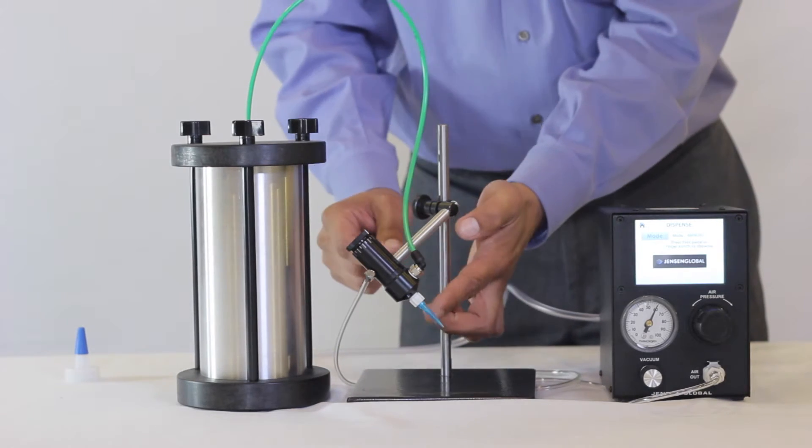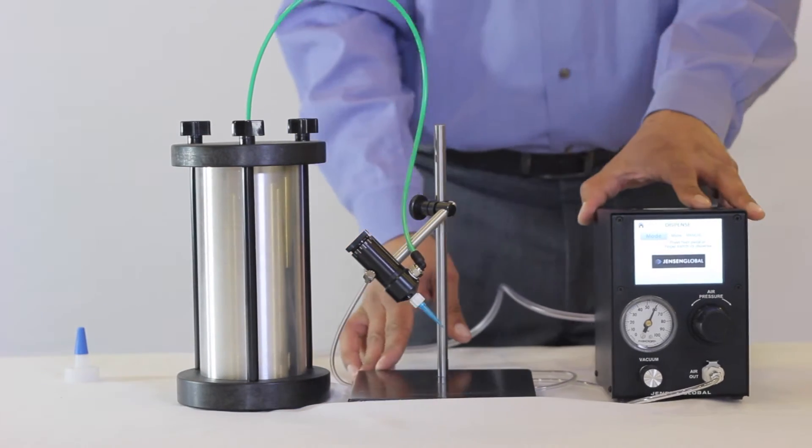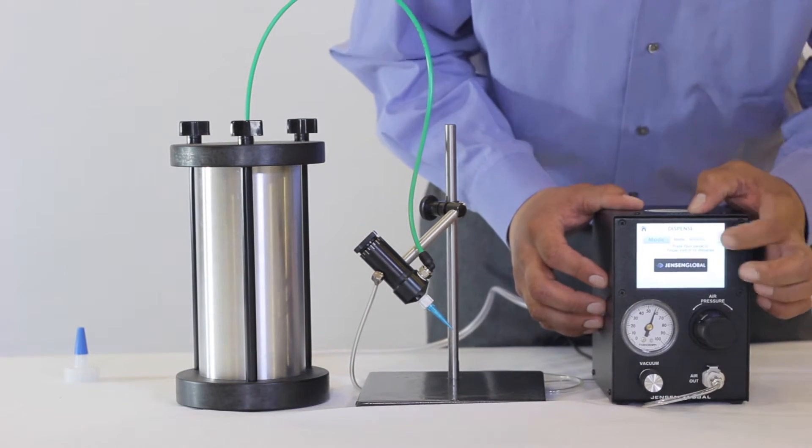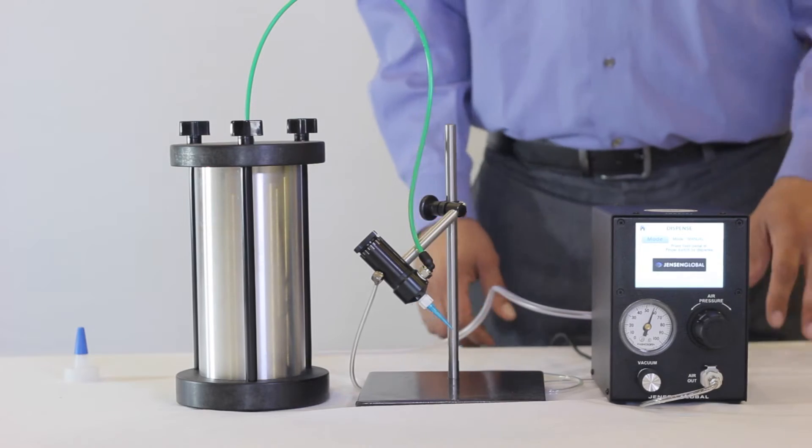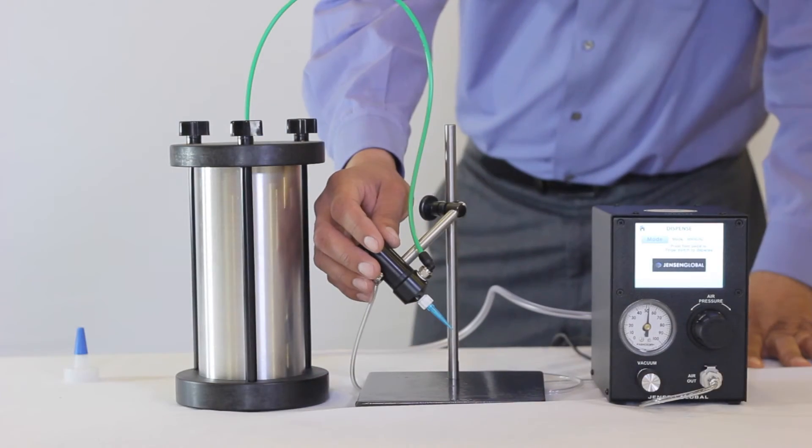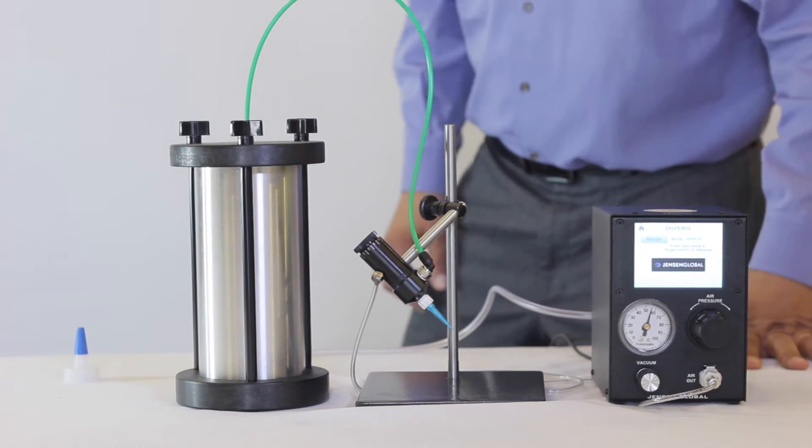The flow of material is determined by stroke adjust, dispensing tip and the pressure of the tank. Set the dispenser to manual mode and with no pressure set to the tank. Press the foot pedal to activate the valve. You should hear and feel the valve opening and closing.